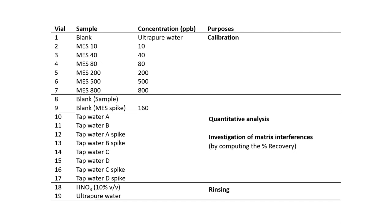So in brief, the lineup for the autosampler may look something like this, where the first nine slots are used for the blanks and the multi-element standards for calibration purposes. Samples treated with nitric acid will be used for quantitative analysis. The spike samples will be used to investigate the matrix interference. And lastly, 10% nitric acid and ultrapure water will be used to rinse the whole system at the end of the ICP-AES analysis.